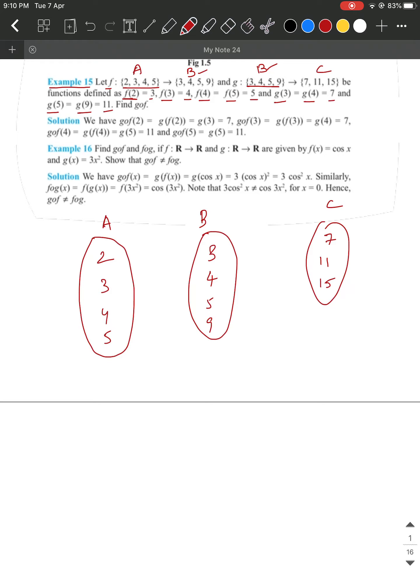Now, if you see F of 2, F is a function defined from A to B. F of 2 is 3, F of 3 is 4, F of 4 equals F of 5 is 5.